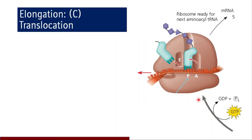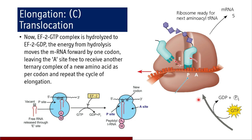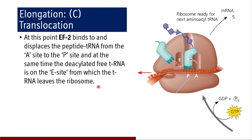Coming to the third step of elongation — translocation. The tRNA is fixed at the P site attached by its anticodon, having no amino acid, and is bound to the exit site. The EEF2-GTP complex is hydrolyzed to EEF2-GDP, and the energy from hydrolysis moves the mRNA forward by one codon, leaving the A site free to receive another ternary complex of a new amino acid. EEF2 binds and displaces the peptide tRNA from the A site to the P site, while the deacylated free tRNA moves to the E site and leaves the ribosome.